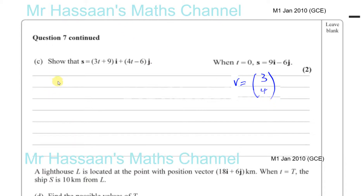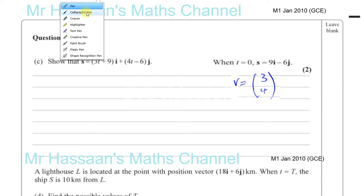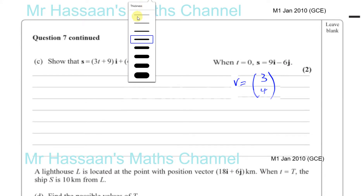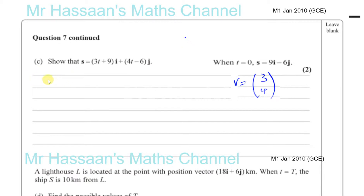We know that the position vector of an object going at a constant velocity is equal to its position when time equals zero plus its velocity times the time. They want us to give a general equation of its position vector, and they call it S. We know the position vector at time equals zero is 9I minus 6J.